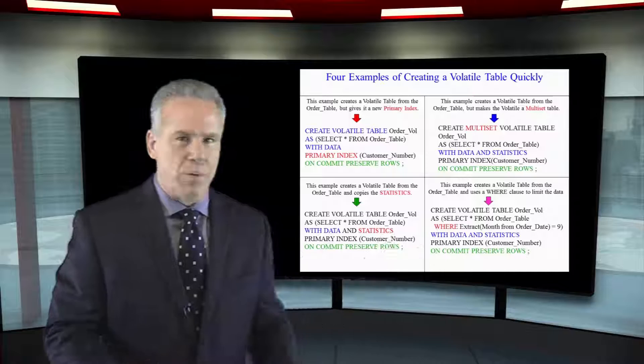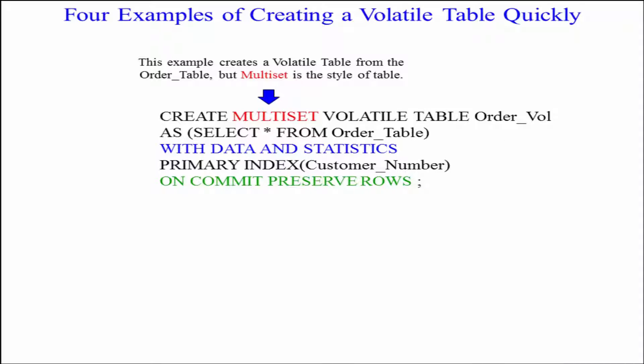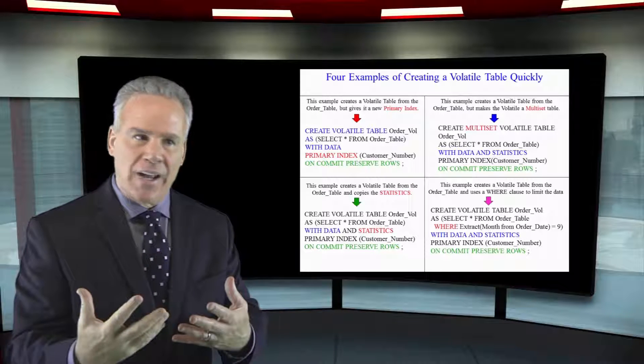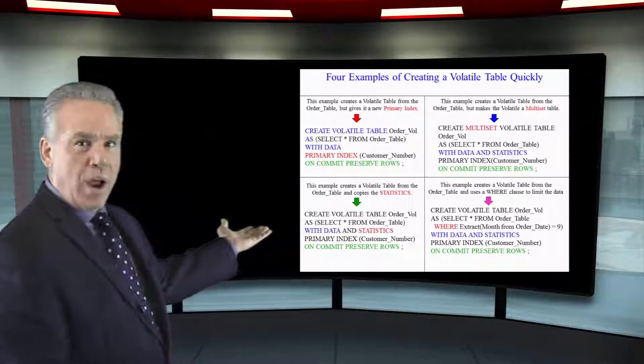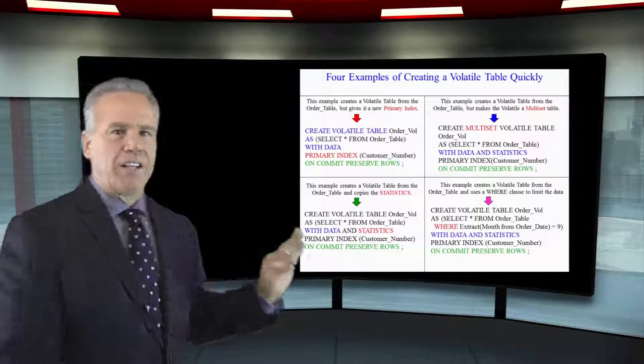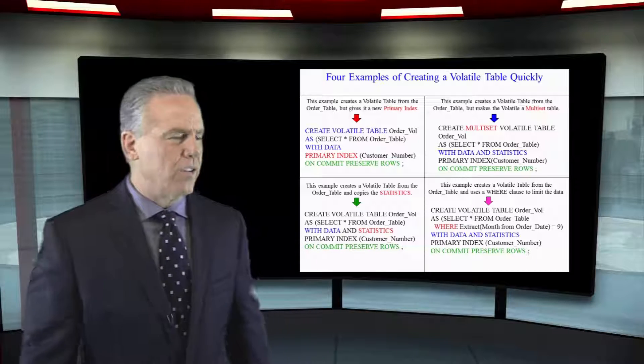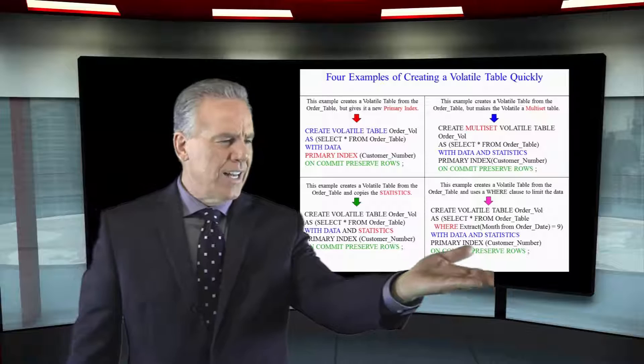Now let's look at the next example in blue. Notice here I create a multi-set volatile table. I can either have a set or a multi-set and then I call it its name and I say as select everything from that order table again with data and statistics. It will copy the statistics from the order table and bring that to the volatile table. Of course I gave it a primary index because I'm really smart and then I say on commit preserve rows stick around the entire session.